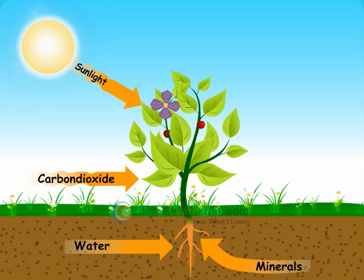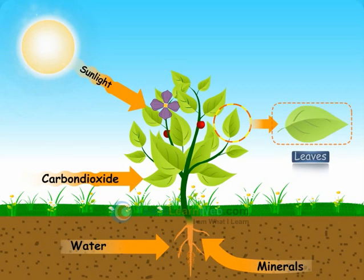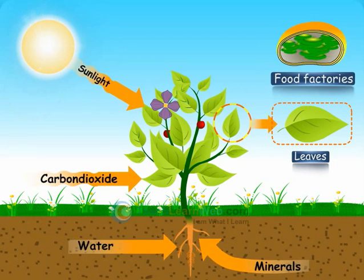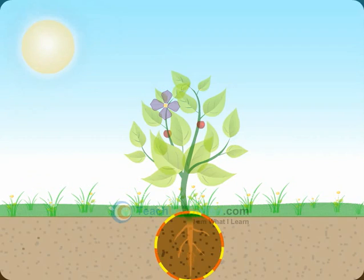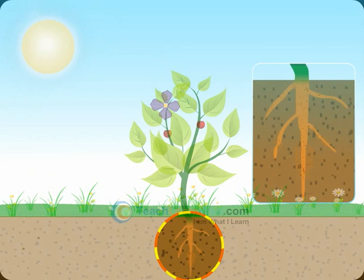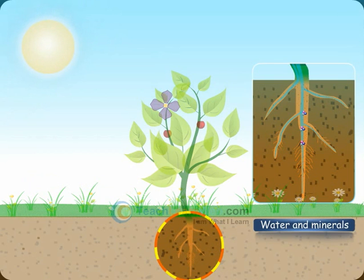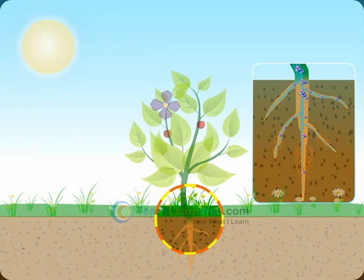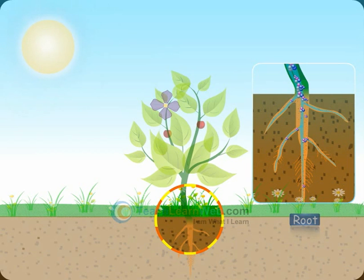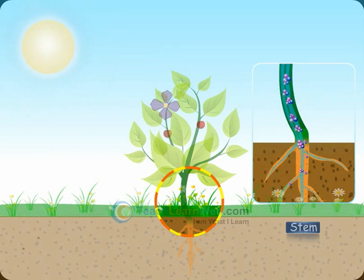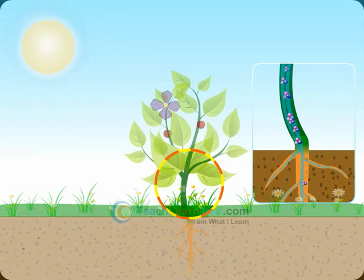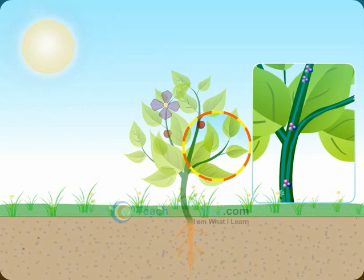The synthesis of food takes place in leaves, which are the food factories of the plant. Water and minerals are absorbed by the root from the soil. They are transported to the leaf by pipe-like vessels which run from the root, stem, branches, and leaves.